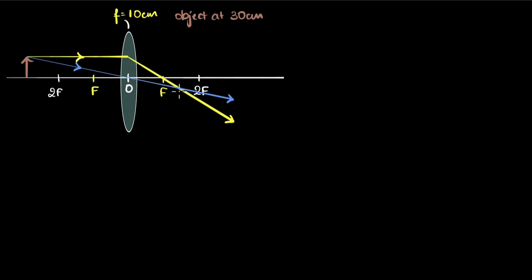Now these two rays are enough, but if you want you can also draw a third ray which is passing through the principal focus. Now after refraction it will go parallel to the principal axis. This is exactly opposite of the first one. If the incident ray is parallel, the refracted ray goes through the focus. If the incident ray is going through the focus, the refracted ray goes parallel to the principal axis.